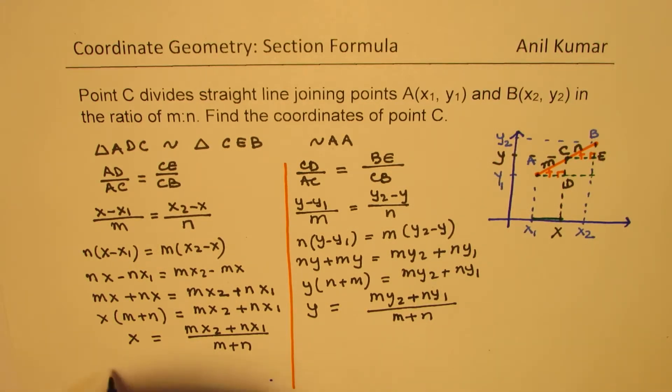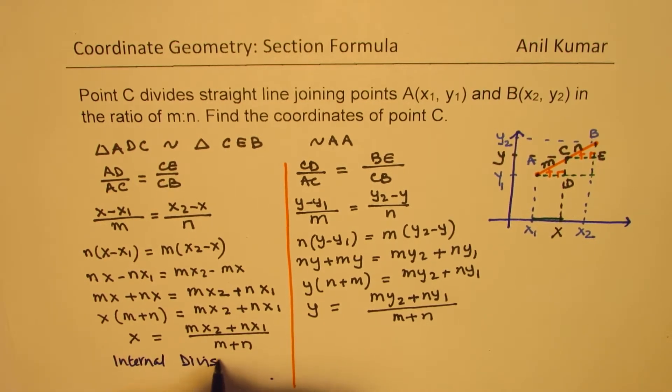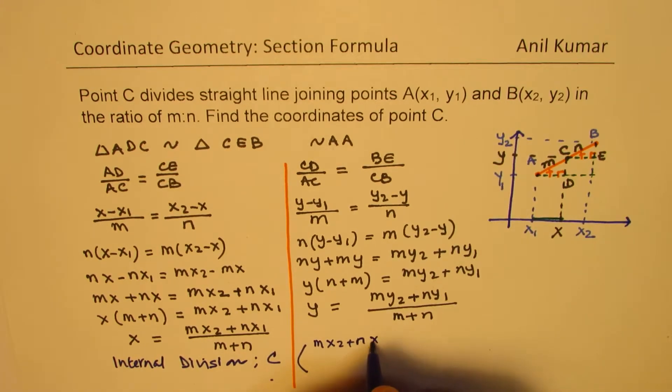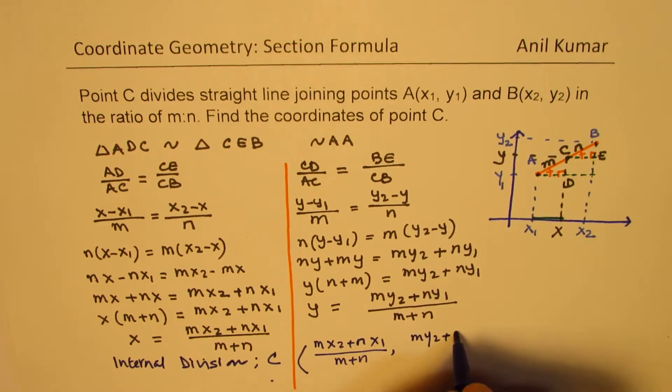So when we have internal division, in that case the coordinates of point C are, let's rewrite this, (mx2 plus nx1) over (m plus n), which is the total length. And the y coordinate is (my2 plus ny1) over (m plus n).